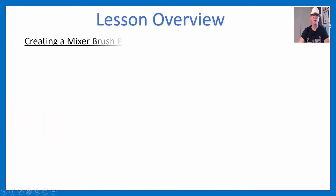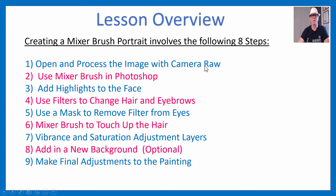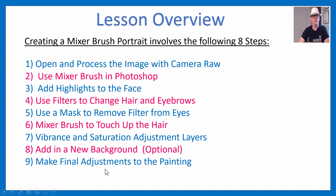Creating a mixer brush portrait has nine steps: open and process with camera raw, mixer brush the face, eyes separately, lips separately, use a filter to change hair and eyebrows, mask over the filter to restore the eyes, mixer brush the hair, do vibrance and saturation adjustments, and add a new background.